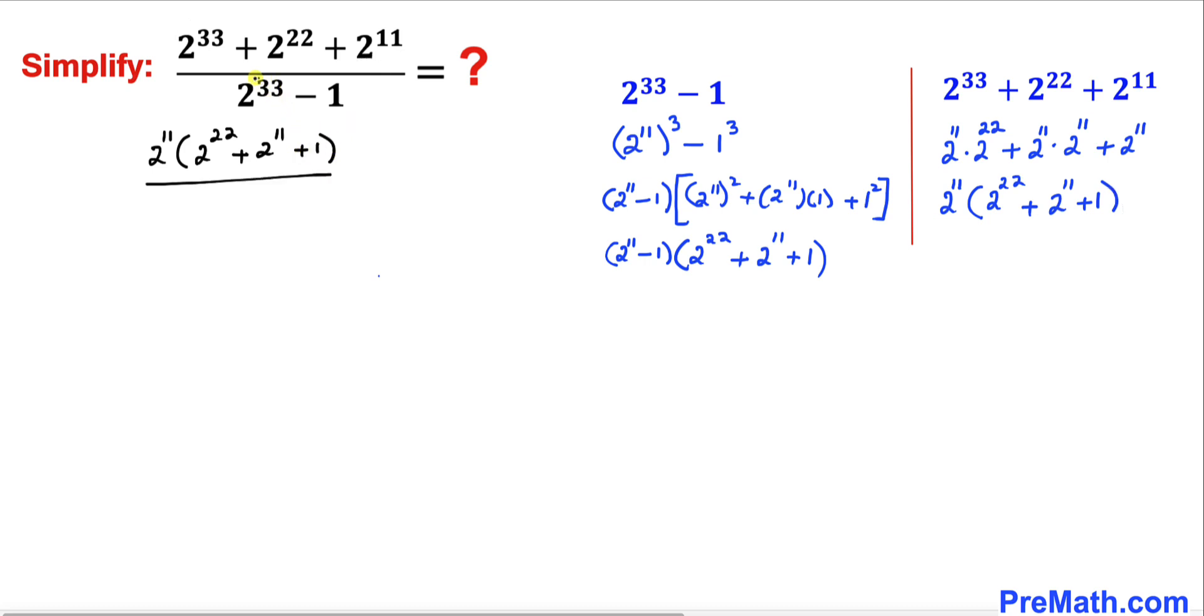So therefore I can write 2 power 11 outside and then 2 power 22 plus 2 power 11 plus 1, divided by, I am going to replace this denominator part by these factors. So I am going to write down 2 power 11 minus 1, times 2 power 22 plus 2 power 11 plus 1.